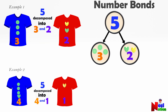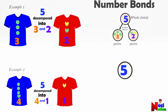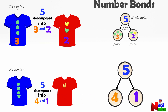Number bonds are represented by circles connected by lines. Number bonds help you picture how larger numbers, or the whole, can be broken into smaller numbers or parts. So five is the whole or total that can be broken down into parts of three and two. In the next example, five is the whole and it can be broken down into smaller parts of four and one. These number bonds represent two different ways to decompose number five.